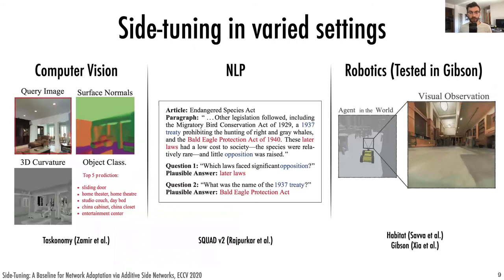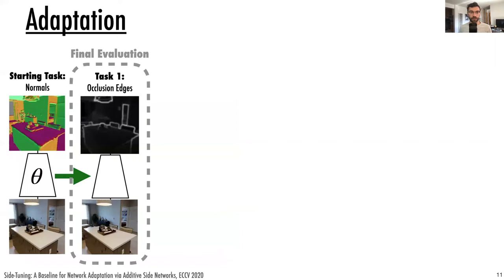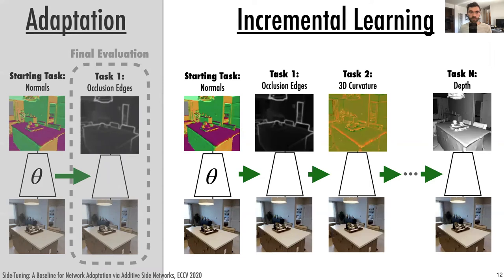Side-tuning naturally extends to handling a sequence of tasks, as in incremental learning. In contrast to network adaptation, which adapts to a single target and is evaluated only on that target task, in incremental learning, the learner must adapt to a sequence of tasks and is evaluated on all of them at the end.